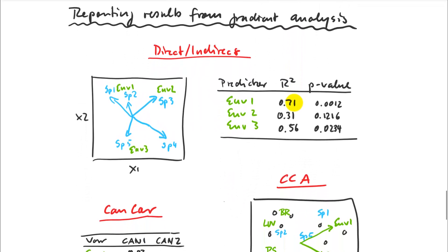So how do we report results from a direct or indirect gradient analysis? I would just show the plots with two sets of vectors. Sometimes people show the arrows for one set of vectors used for the ordination and don't show the other set — instead they put labels where the tips of those vectors would be. But nothing should stop you from actually putting both sets of vectors in the plot. You can also report the variance explained and the significance of the association in a separate table.